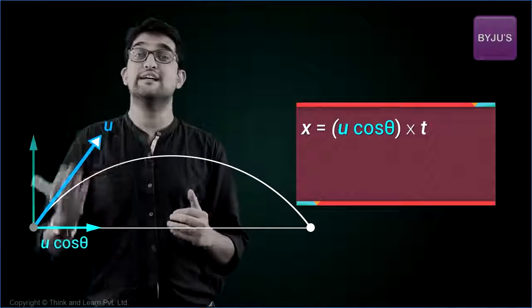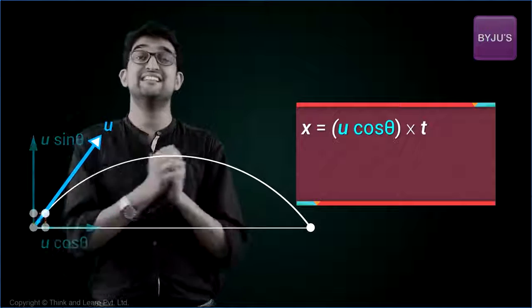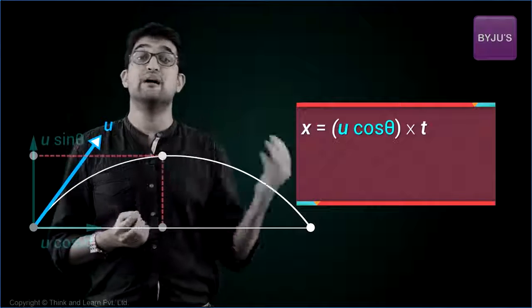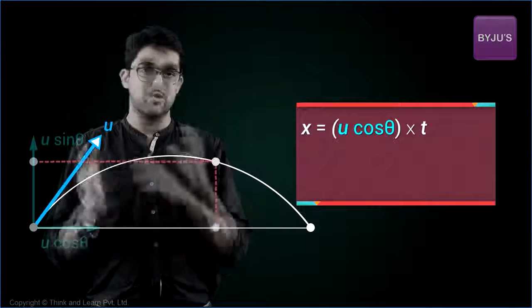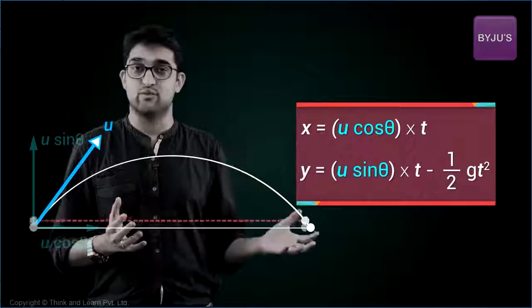What happens in the vertical direction? Initial velocity is u sine theta. Initially, it's a decelerated motion because gravity reduces the speed. Once it reaches maximum height, it becomes an accelerated motion. So the expression will be u sine theta t minus half gt square. That's it.